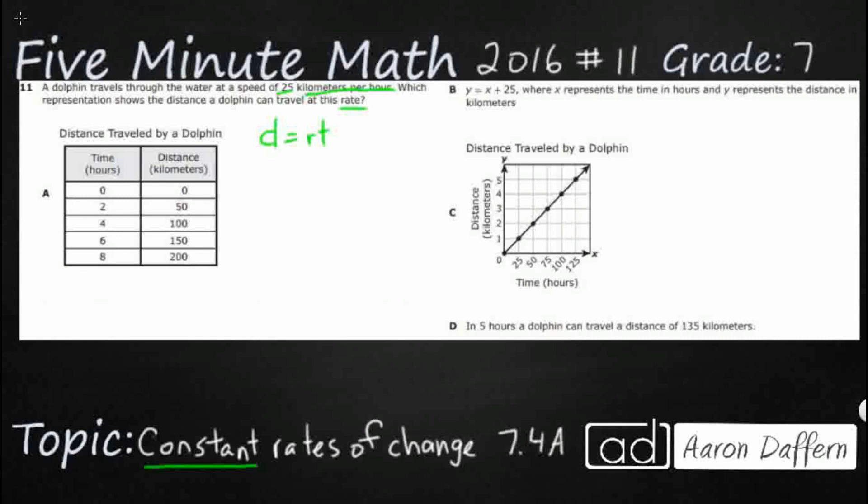Let's see if distance equals rate times time makes sense for A. Distance, they've got it listed right there, and we've got the time, and they're telling us this 25. Let's see if that works. 0 equals rate of 25 multiplied by 0. Does 0 equal 25 times 0? Yeah, because anything times 0 is 0.